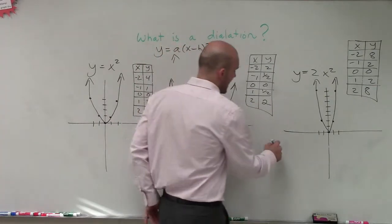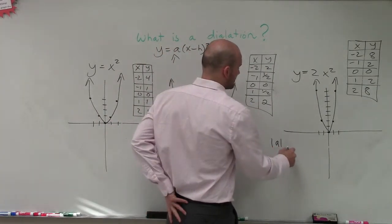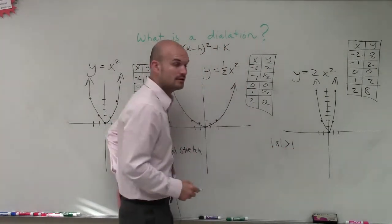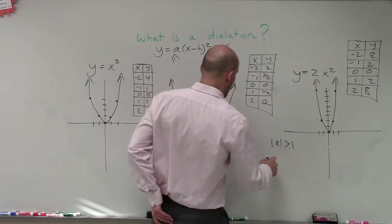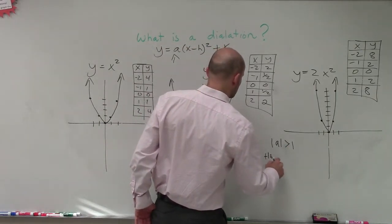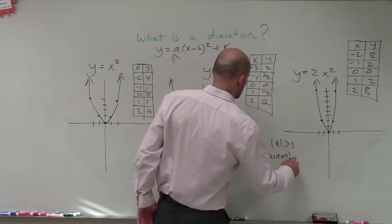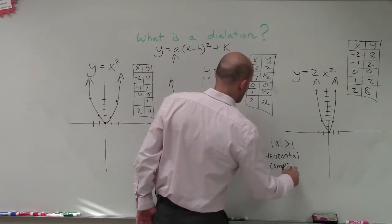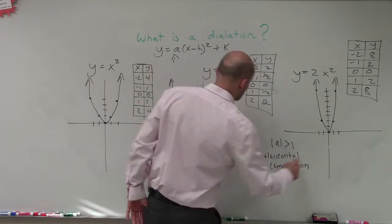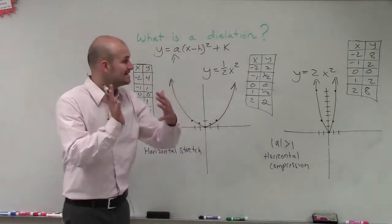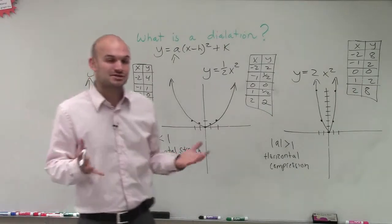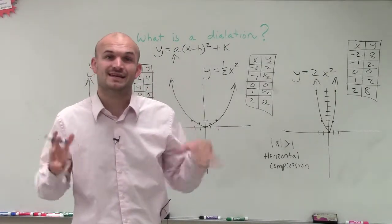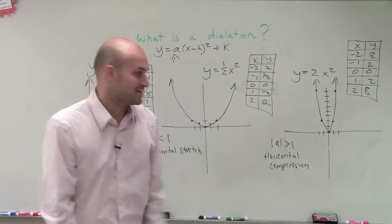If the absolute value of a is less than 1, then we have a horizontal stretch. If the absolute value of a is greater than 1, then we have a horizontal compression. And that means we're compressing the graph.